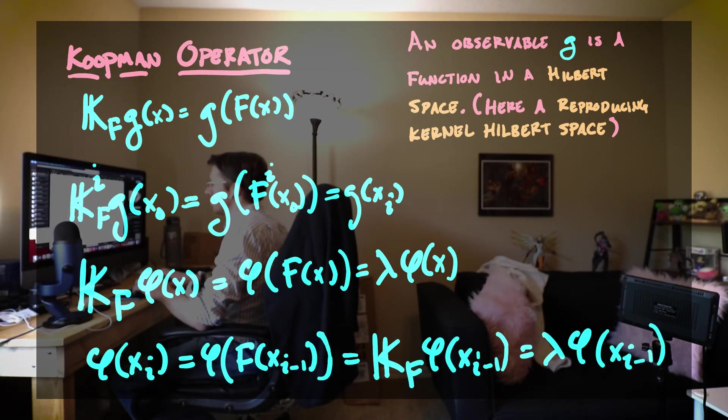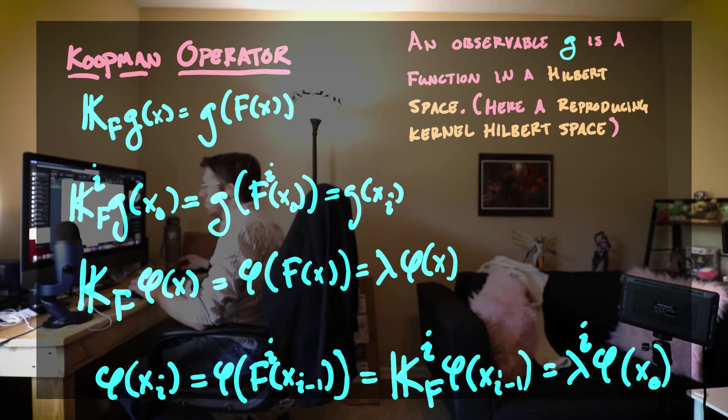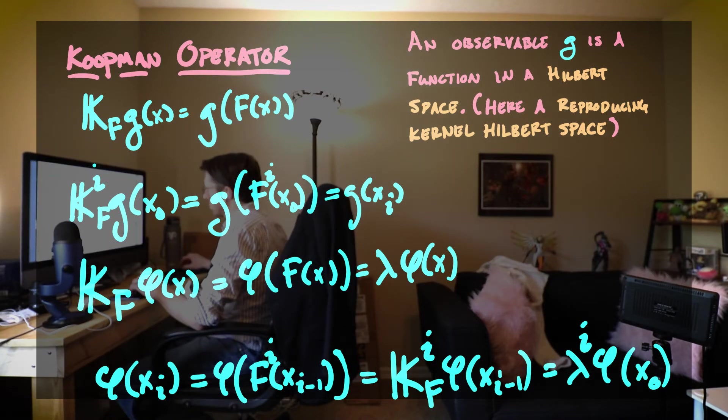And we can see that iterations of the Koopman operator acting on our observables can advance our discrete time system inside of the observable itself. Now we want to look at a very special collection of observables, and those are our eigenfunctions of the Koopman operator. The eigenfunction evaluated at xi is lambda to the i times eigenfunction evaluated at x0.